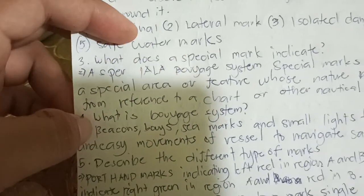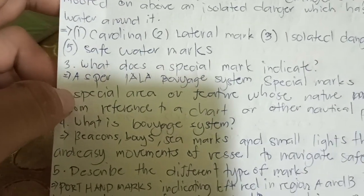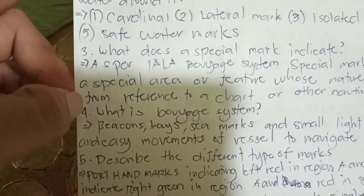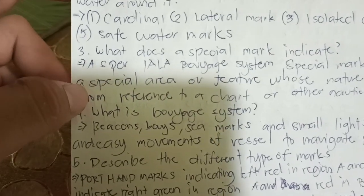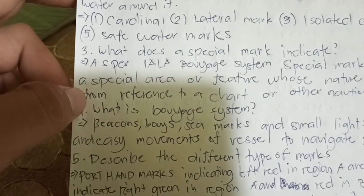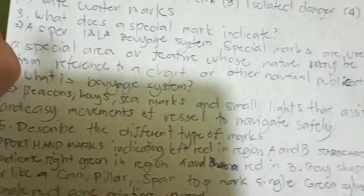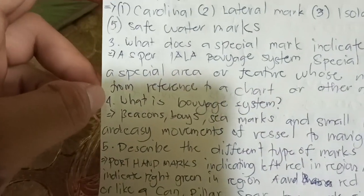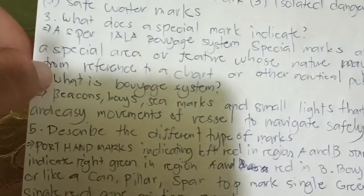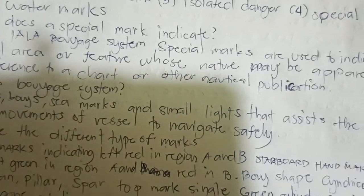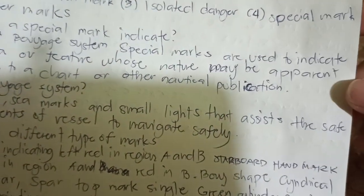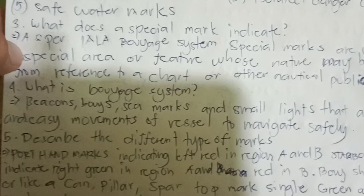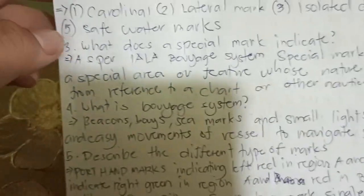Number three, what does a special mark indicate? As per the IALA buoyage system, special marks are used to indicate a special area or feature whose nature may be apparent from reference to a chart or other nautical publication.